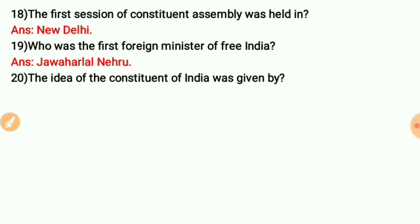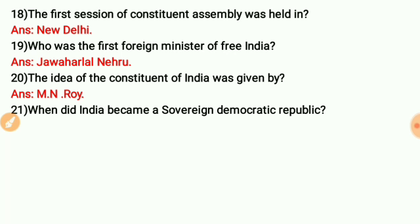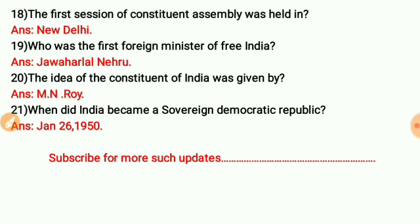The idea of a Constituent Assembly for India was given by M.N. Roy. When did India become a sovereign democratic republic? It was on January 26, 1950.